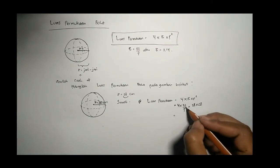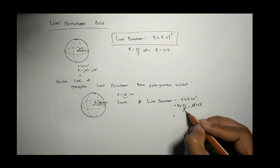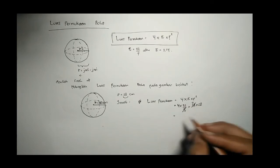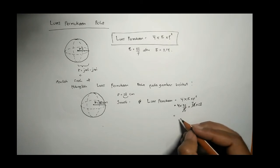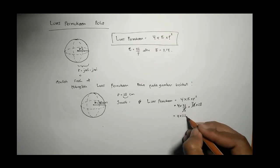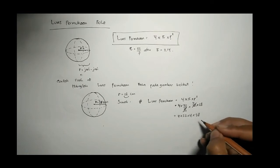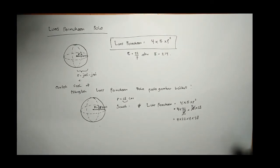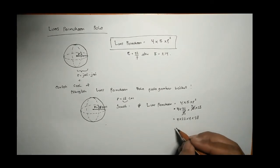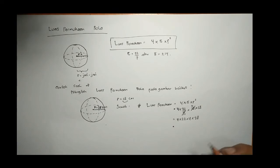Kita sederhanakan yang bisa disederhanakan, 7 dengan 28 bagi 7, 1, bagi 7, 1, bagi 7, 4. 4 kali 22 itu 88 ya. Oke kita tulis dulu 4 kali 28, ini baru kita hitung. 4 kali 22 itu 88.